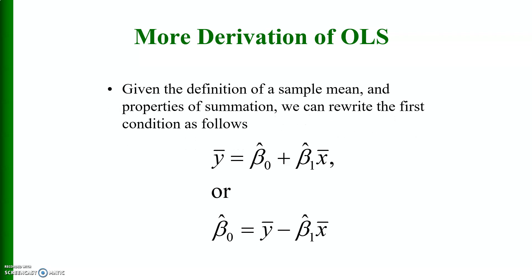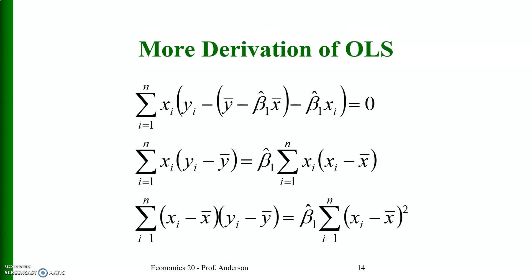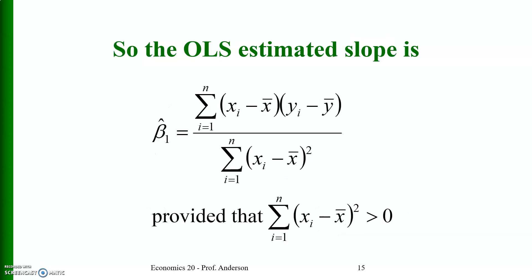Using the definition of sample mean and properties of summation, we rewrite the first condition as: y_bar = beta_naught_hat + beta_1_hat * x_bar, or beta_naught_hat = y_bar - beta_1_hat * x_bar. Rearranging the second condition gives: beta_1_hat = Σ(x_i - x_bar)(y_i - y_bar) / Σ(x_i - x_bar)², provided that Σ(x_i - x_bar)² > 0.